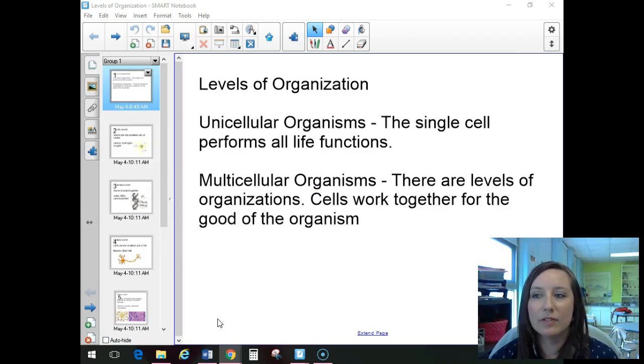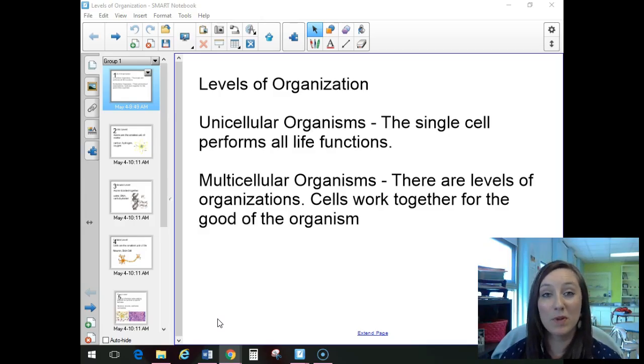When we're talking about levels of organization, what those actually are, in unicellular organisms, the single cell performs all of life functions, so we're not going to see any levels to it. But with multicellular organisms, we have a lot of cells and a lot of specialized different cells, each doing different functions. So to kind of organize that, we have levels of organization, and those cells are working together for the good of the organism.